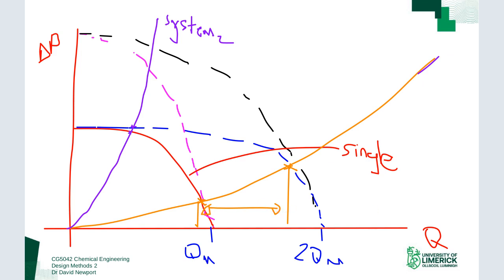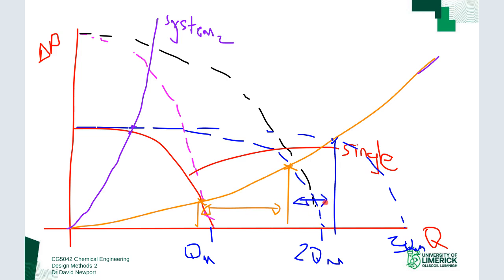If you get greedy and add a third pump in parallel — going to 3Q_M — you can see diminishing returns on the change in flow rate. You get an initial gain on low-pressure systems, but as you keep adding pumps in parallel you get diminishing returns.